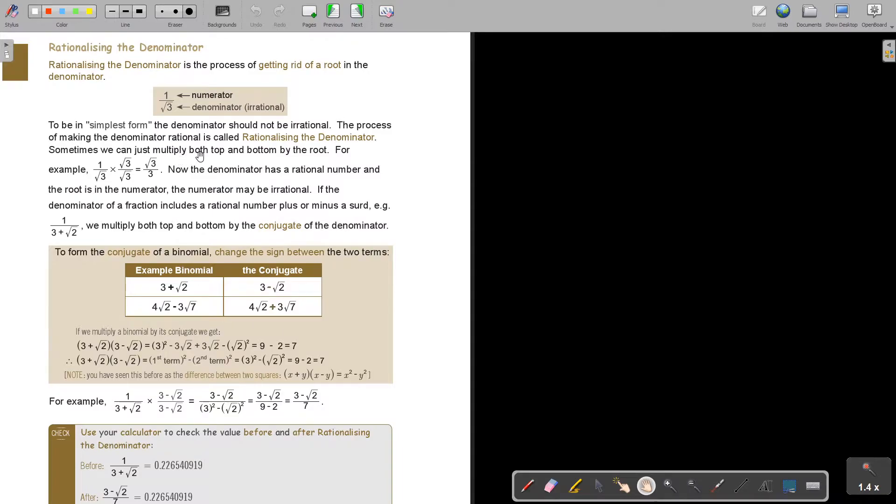Sometimes we can just multiply both top and bottom by the root. For example, if you see there's a square root just multiply with square root 3, and whatever you multiply at the bottom you also multiply at the top. If you say square root 3 times square root 3 I just get 3 and there is my square root 3. Now the denominator has a rational number and the root is in the numerator. The numerator may be irrational if it's in the simplest form.